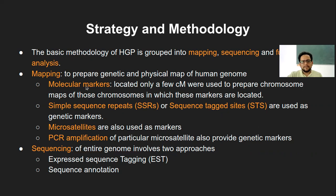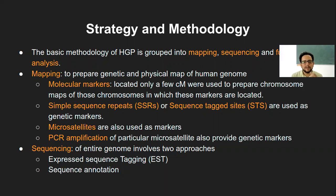The first part of mapping is identifying molecular markers. Like landmarks when we travel, there are certain nucleotide sequences which act as molecular markers, located only a few centimorgans apart from each other. These were used to prepare the chromosomal map. These markers are located within particular chromosomes — the same marker sequence can be closer in chromosome one and farther in chromosome three or four.